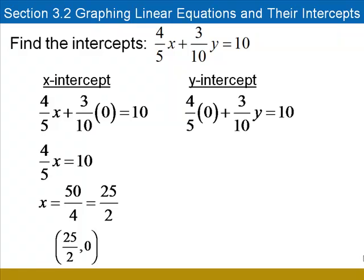Moving on to the y-intercept, we substitute 0 for x. We have the equation 3 tenths y equals 10, and we'll solve that by multiplying both sides by 10 over 3. The y-intercept is at 100 thirds.